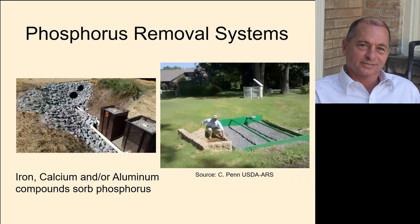Then there are phosphorus removal systems in a broad sense. Dr. Chad Penn with USDA ARS in Indiana has worked on this quite a lot. Any byproduct containing iron, calcium, and/or aluminum can potentially sorb phosphorus — meaning the phosphorus sticks to the outer surface of particles high in these elements. You can build a filter field with something like iron slag from a smelter, which is high in iron or aluminum, and route drainage water through this filter to sorb dissolved phosphorus. It's a very effective way to remove dissolved phosphorus.